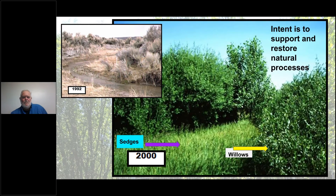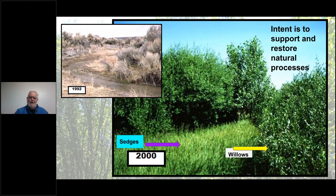The intent of bioengineering treatments is to support and restore natural processes. At Trout Creek in northern Nevada, heavily grazed since the early 1800s with no willows remaining, we were able to get a change in management, established riparian pastures, and then planted. Eight years later, sedges have come back, with willows and cottonwoods growing along the bank — restoring those natural processes that protect it.